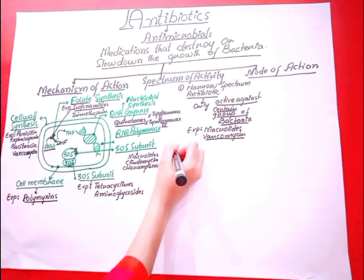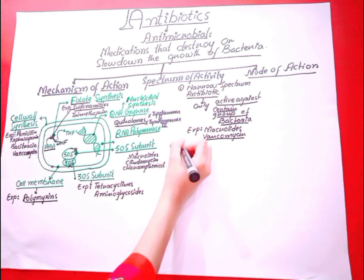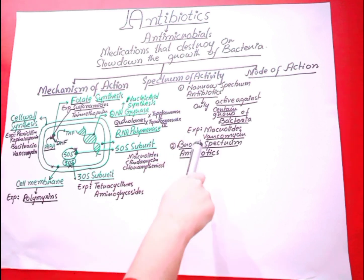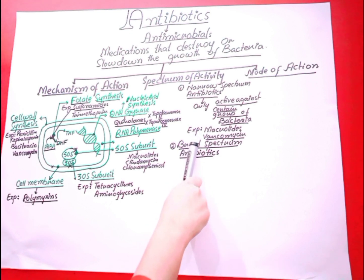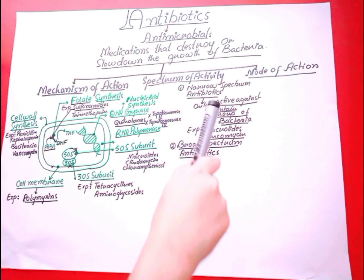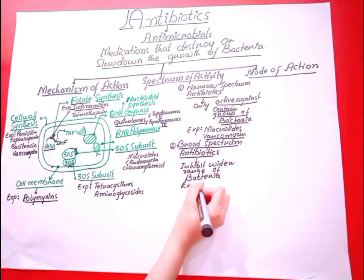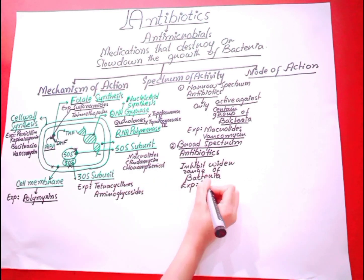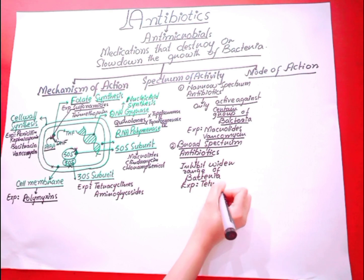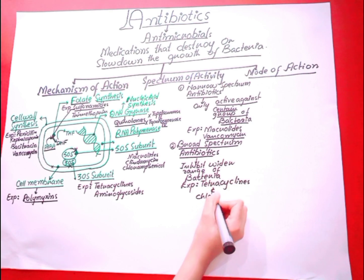Broad spectrum antibiotics are the group of antibiotics that inhibit a wider range of bacteria. Examples of broad spectrum antibiotics are tetracyclines and chloramphenicol.